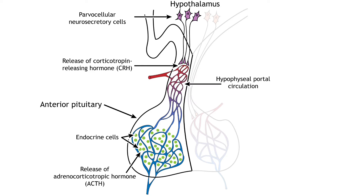When CRH reaches the anterior pituitary, it causes the endocrine cells of the pituitary to release adrenocorticotropic hormone, or ACTH, into the general circulation.